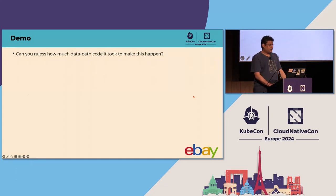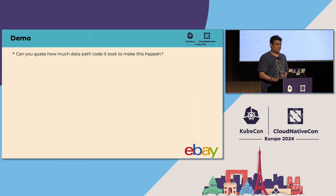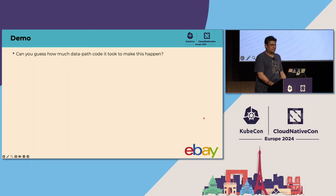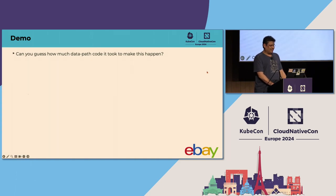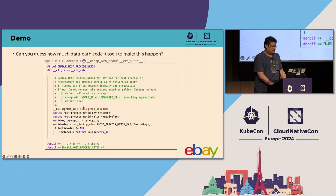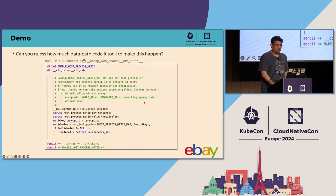Let's have a quick poll: how much code did I have to write in the network traffic data path in order to figure out the identity of the process sending the packet? How many think it's more than 100 lines? A few. More than 10, less than 100? Less than 10? Well, let's take a look — that's it. The fact that it is so ridiculously simple to make this happen speaks volumes about the maturity of Cilium for this purpose.